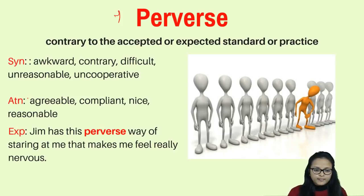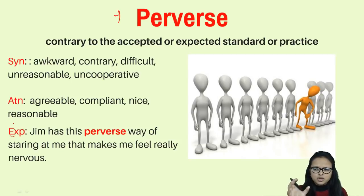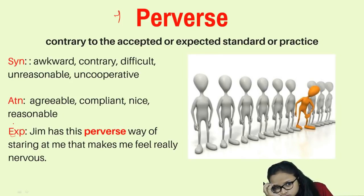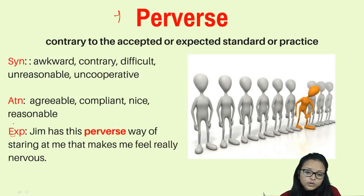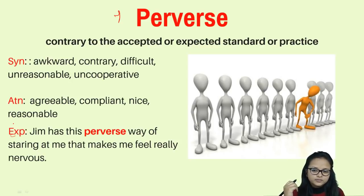Antonyms for perverse are agreeable, compliant, nice, and reasonable. Example: Jim has a perverse way of staring at me that makes me feel really nervous. If someone stares at you in an awkward way, you will feel uncomfortable — that is being perverse.